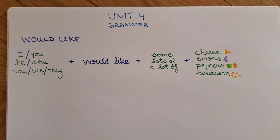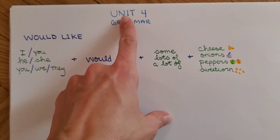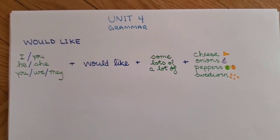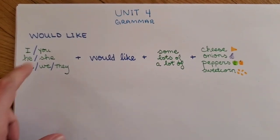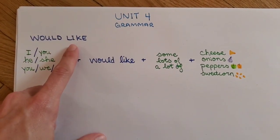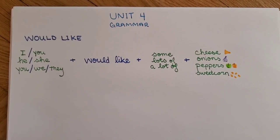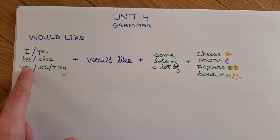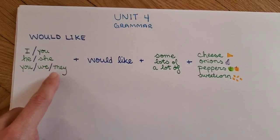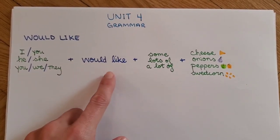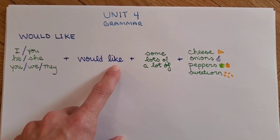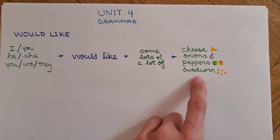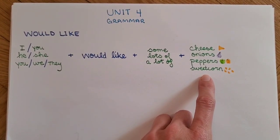Hello boys and girls! Today for Unit 4, we are going to review the grammar of creative cooking. Let's start with 'would like.' Remember, to make a sentence we start with a pronoun — I, you, he, she, we, or they — and then 'would like,' followed by 'some,' 'lots of,' or 'a lot of,' and a topping such as cheese, onions, peppers, etc.